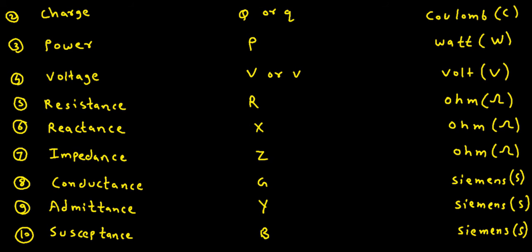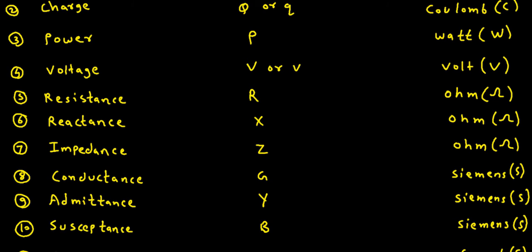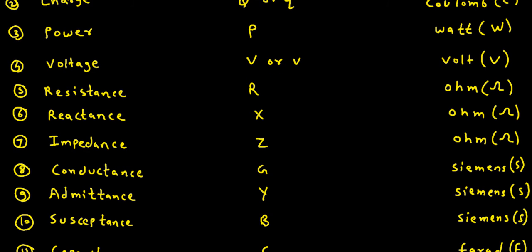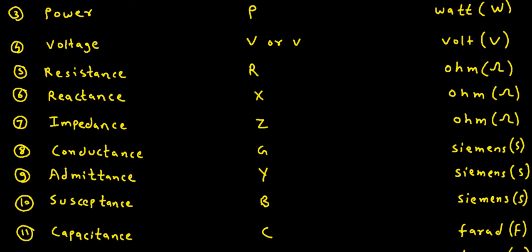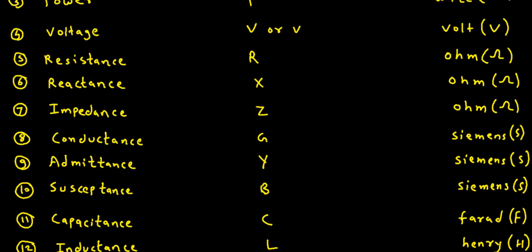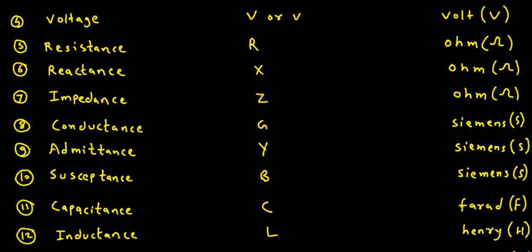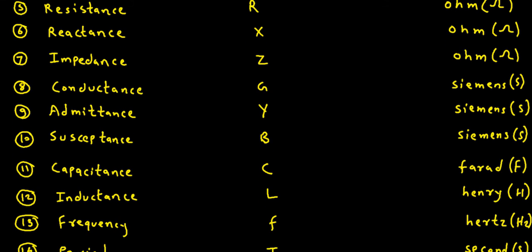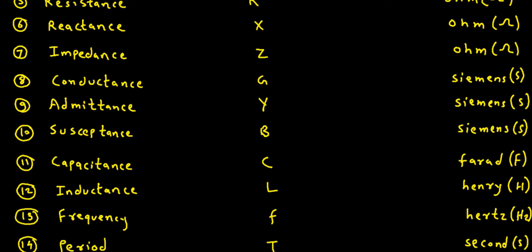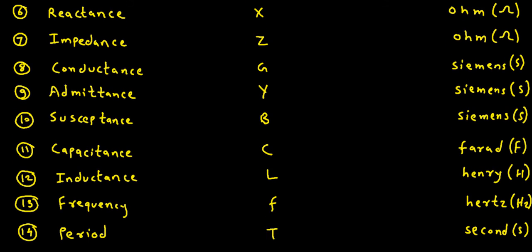Quantity: Conductance. Symbol: capital G. Basic Unit is Siemens, denoted by capital S. Quantity: Admittance. Symbol: capital Y. Basic Unit is Siemens, denoted by capital S. Quantity: Susceptance. Symbol: capital B. Basic Unit is Siemens, denoted by capital S.